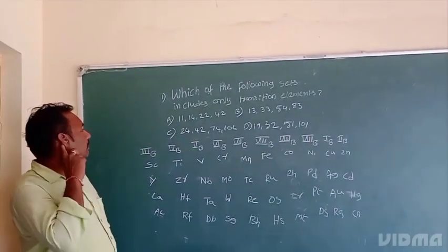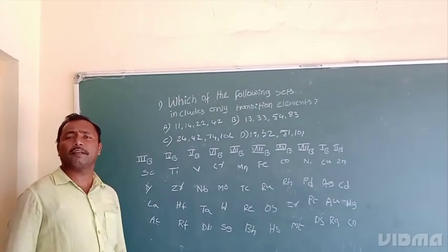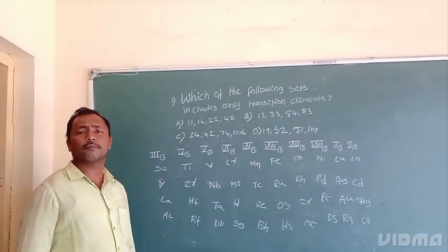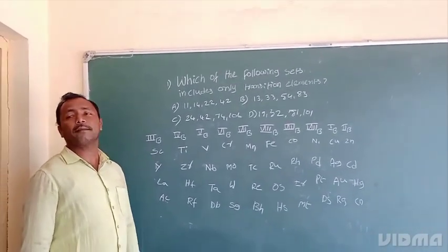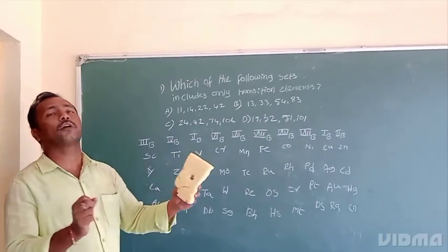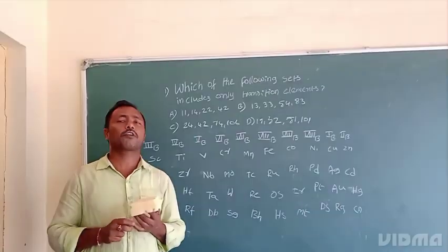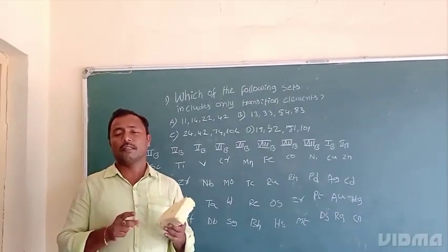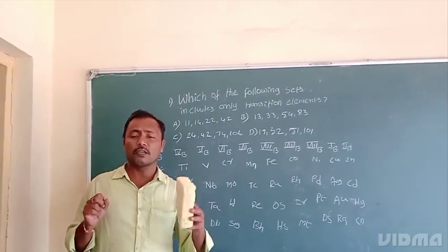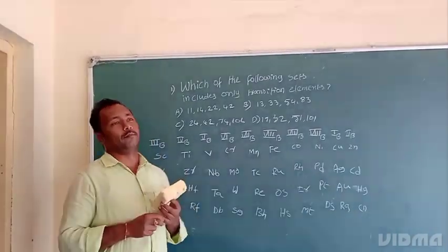Transition elements, what is the position of the transition elements in the modern periodic table? They are located between S-block and P-block elements in the modern periodic table.